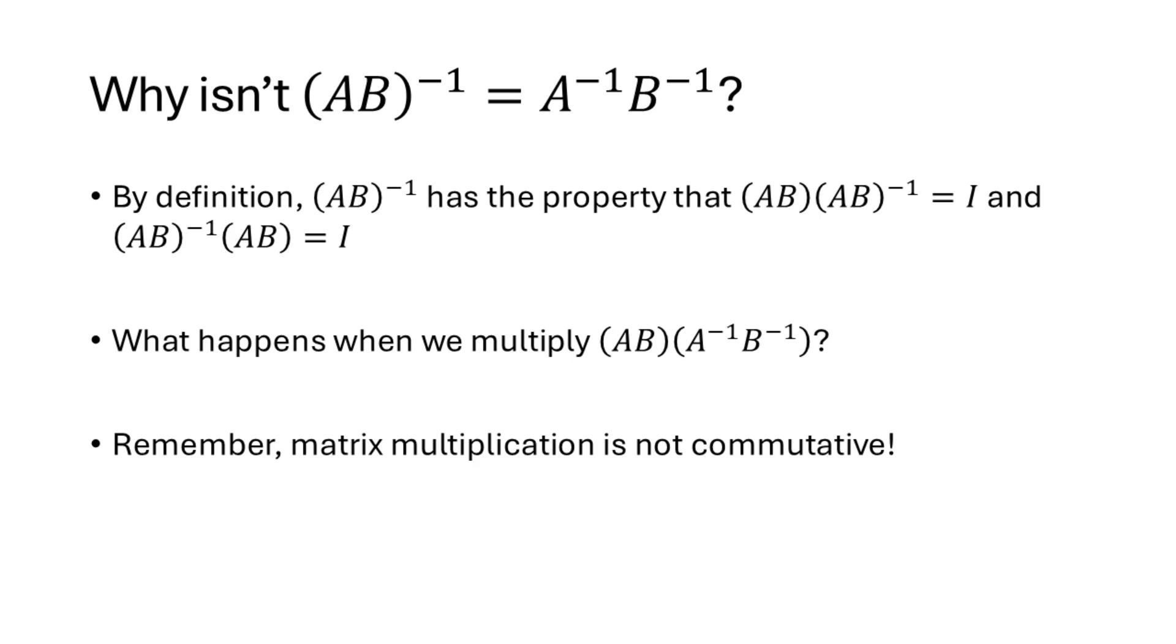Well what we're looking for when we say AB inverse is the matrix that we multiply by AB in either order to get back I. So what happens when we multiply AB times A inverse B inverse? Well we would like to cancel out the A and the A inverse, and we'd like to cancel out the B and the B inverse. But we can't, because in order to cancel out the A and the A inverse, we would have to get around that B that's in between the A and the A inverse.